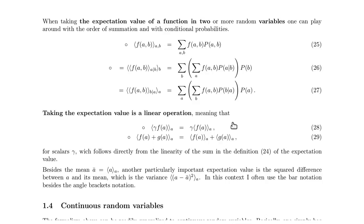What we will use quite often is the fact that the expectation value is a linear operation. If we scale the function we average over by some factor gamma, we can take gamma out and scale the average of A with that factor. Or, if we have the sum of two functions that we average over, that equals the sum of the averages. This is simply a consequence of the sum being a linear operation.